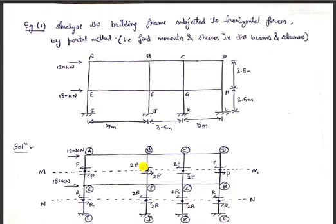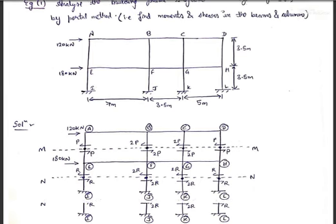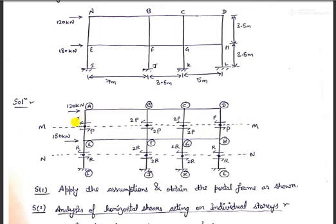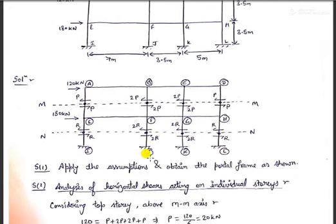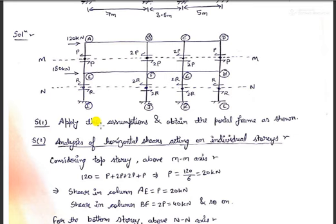For this particular portal frame we are supposed to analyze the bending moment and shear force in various beams and columns. The first step is to apply the assumptions: horizontal forces act at the joints, the points of contraflexure are at the midpoints of various members — physically acting similar to internal hinges, meaning shear is transferred but no moment is transferred across these points. The next assumption is that interior columns take twice the horizontal shear of external columns. We have applied these assumptions and obtained the portal frame as shown.